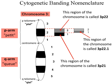The ordered list of loci known for a particular genome is called a gene map. Gene mapping is the process of determining the specific locus or loci responsible for producing a particular phenotype or biological trait.